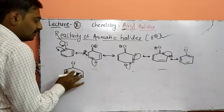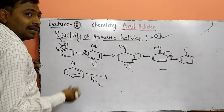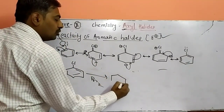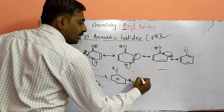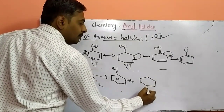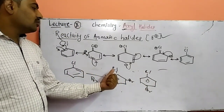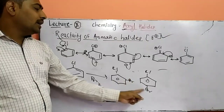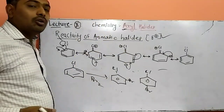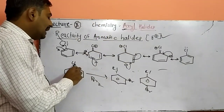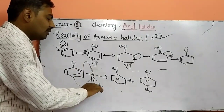For example, when we take chlorobenzene and subject it to bromination, we get two products: one product due to ortho substitution — ortho-bromochlorobenzene — and one product due to para substitution — para-bromochlorobenzene. Why? Because electron density is greater at the ortho and para positions, so the electrophile can easily attack from the ortho and para positions. This is the reactivity of aromatic compounds.